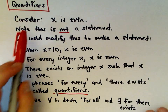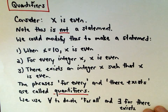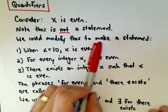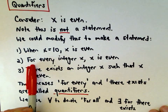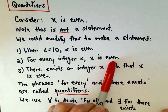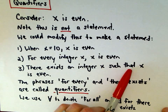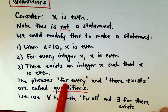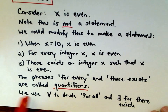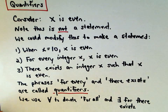Finally, quantifiers. Consider the sentence 'X is even' — this is not a mathematical statement because we don't know what X is, so it has no truth value. But we can modify it: 'when X is 10, X is even' is now a statement. Or 'for every integer X, X is even' — that's also a statement, even if false. Or 'there exists an integer X such that X is even.' The phrases 'for every' and 'there exists' are called quantifiers, often written as an upside-down A (for all) and a backward E (there exists).